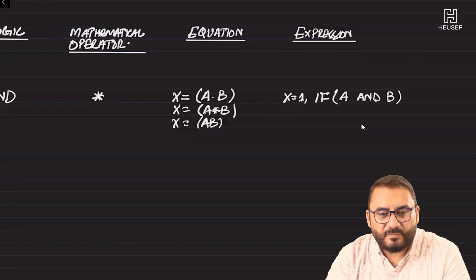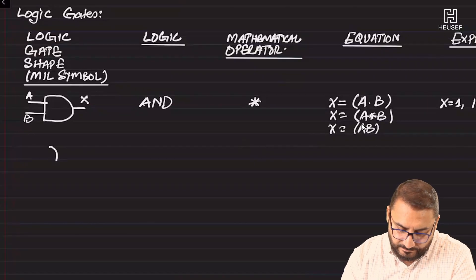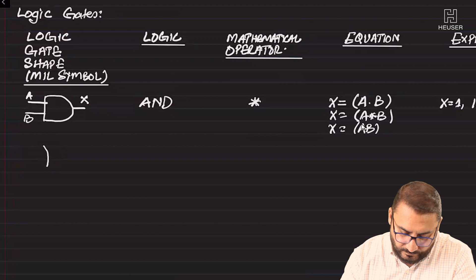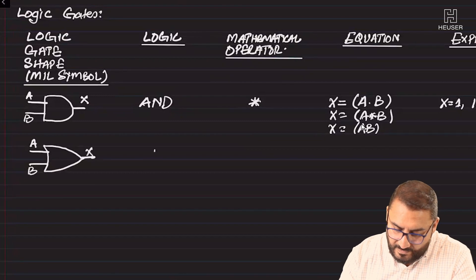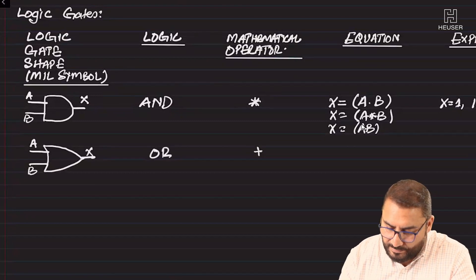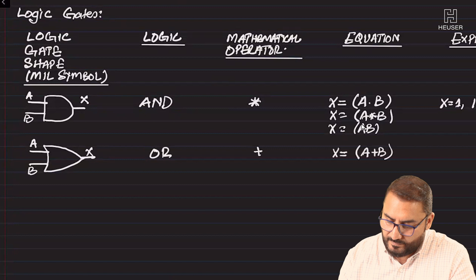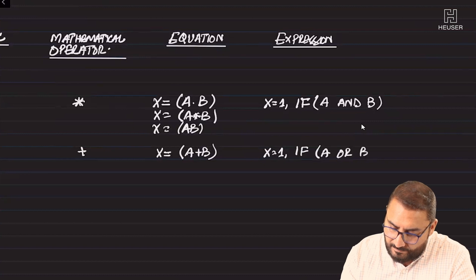The second gate is the OR gate. We call it OR and there is a plus sign used to represent it. The equation would be X = A + B, and the expression will be X = 1 if A OR B.